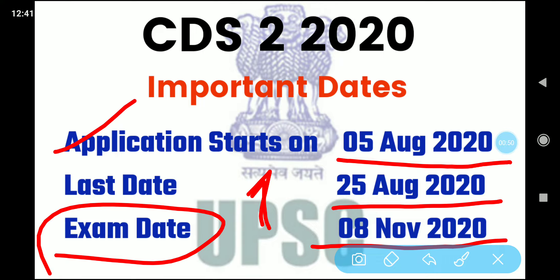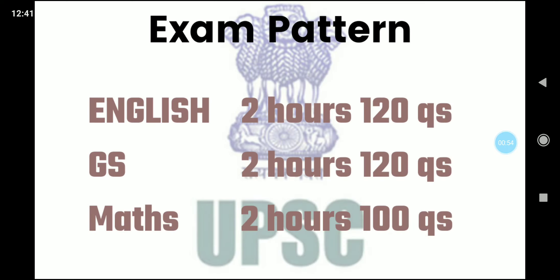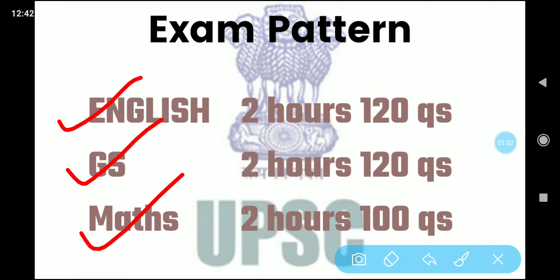Now we will discuss about the examination pattern. You can see the pattern on your screen. The pattern consists of 3 papers: English, GS, and Maths. These 3 papers are of 2 hours each, but the number of questions are different. English and GS consist of 120 questions each, but the number of questions in Mathematics is 100.